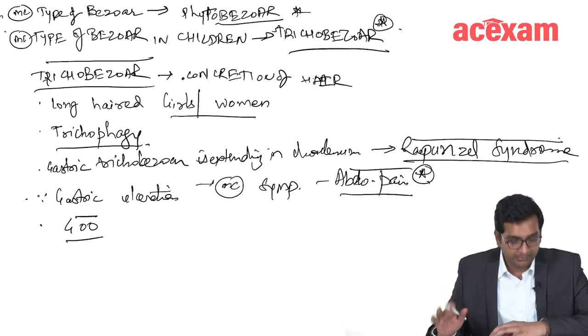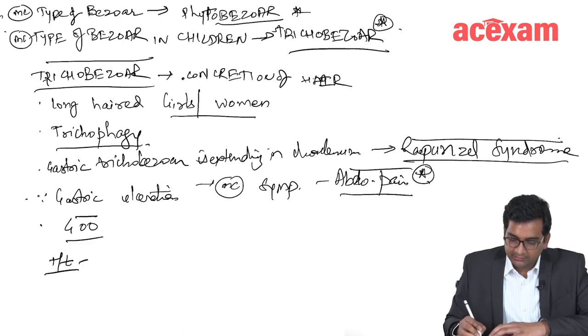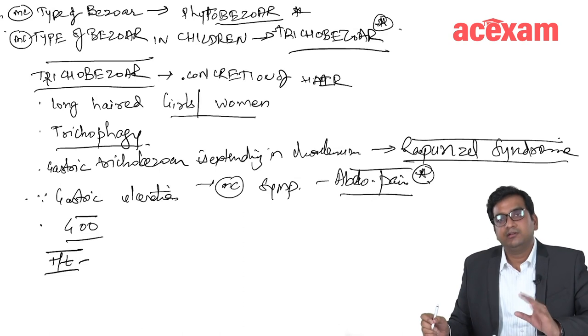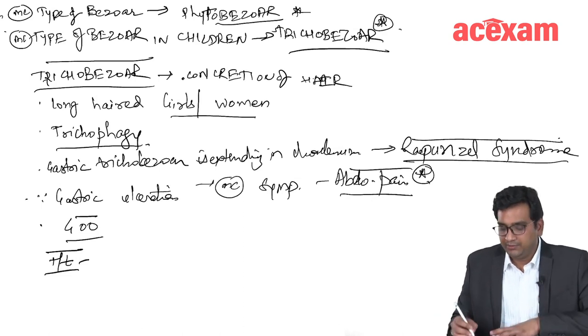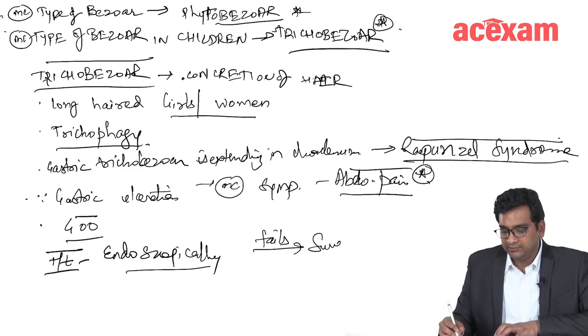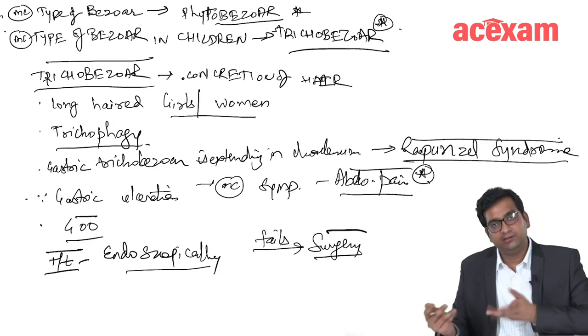But the most common symptom is abdominal pain. Now, the treatment is if there is a small collection of hairs, we can remove it endoscopically. If endoscopic removal fails, then we will go for surgery and surgical removal is done.